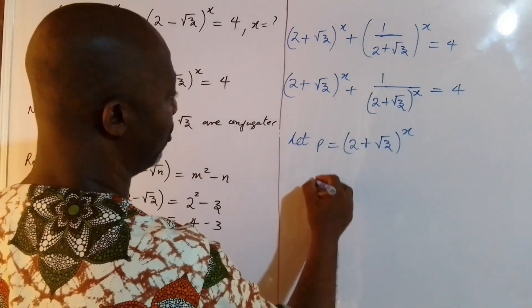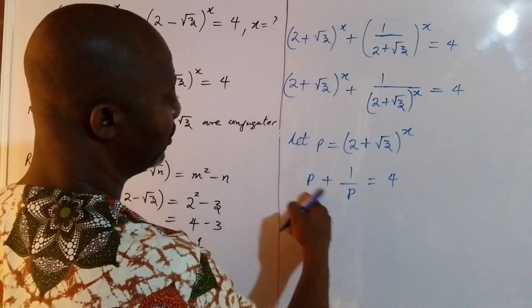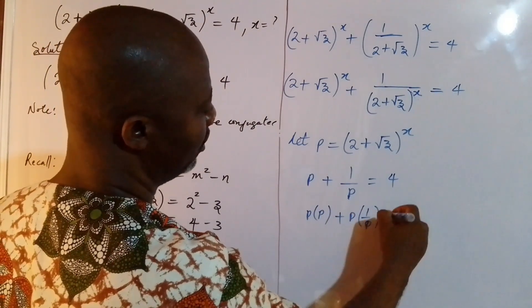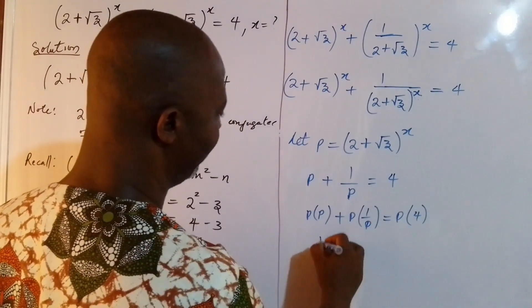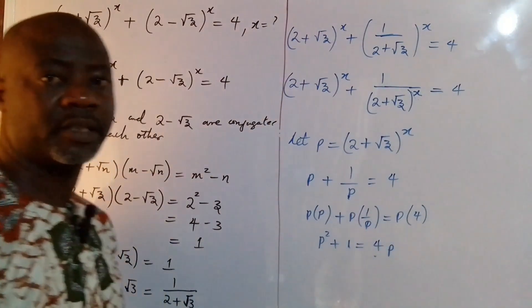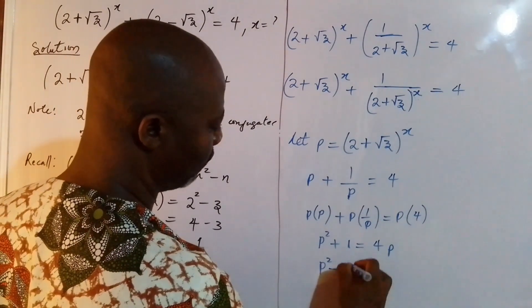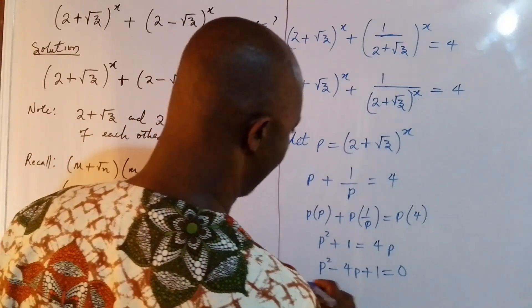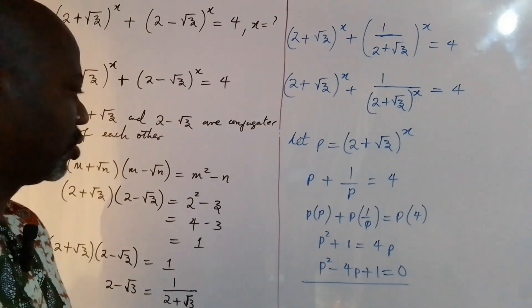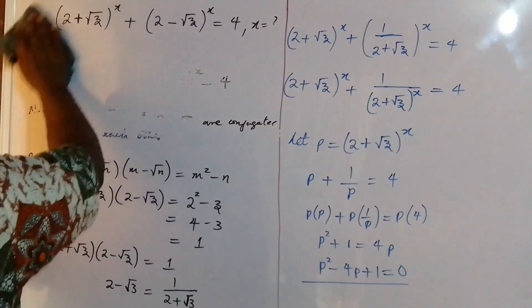With the substitution t = (2 + √3)^x, the equation becomes t + 1/t = 4. Multiplying each term by t gives t² + 1 = 4t. Transforming this into a standard quadratic equation: t² − 4t + 1 = 0. Looking at this, I don't think it can be solved by factorization, so we need to use the quadratic formula.